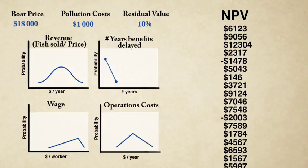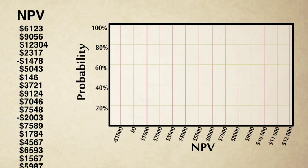The result will be what we were looking for. A series of net present values based on the probabilities of the individual variables. And now we can build the distribution of those net present values on a curve.